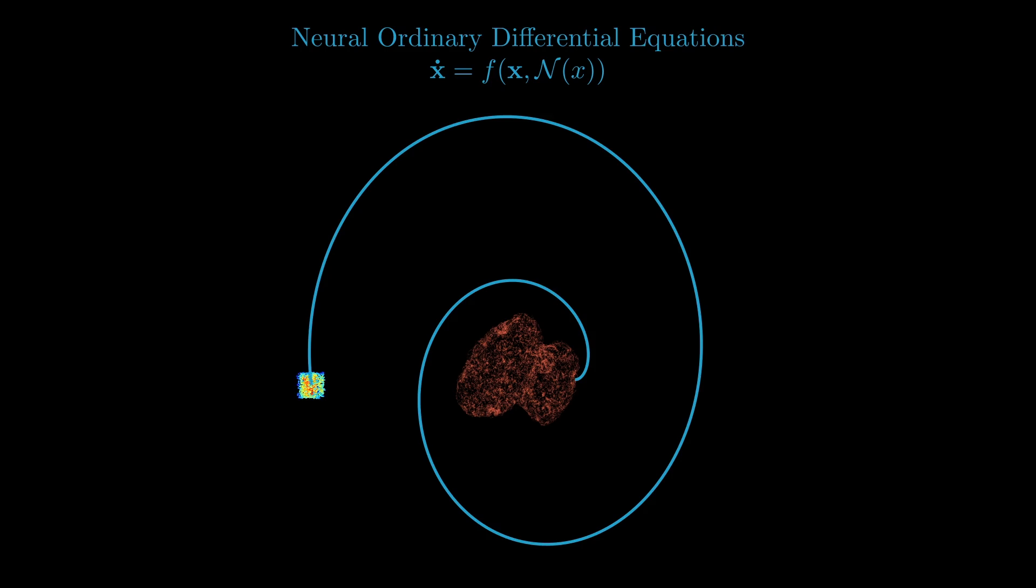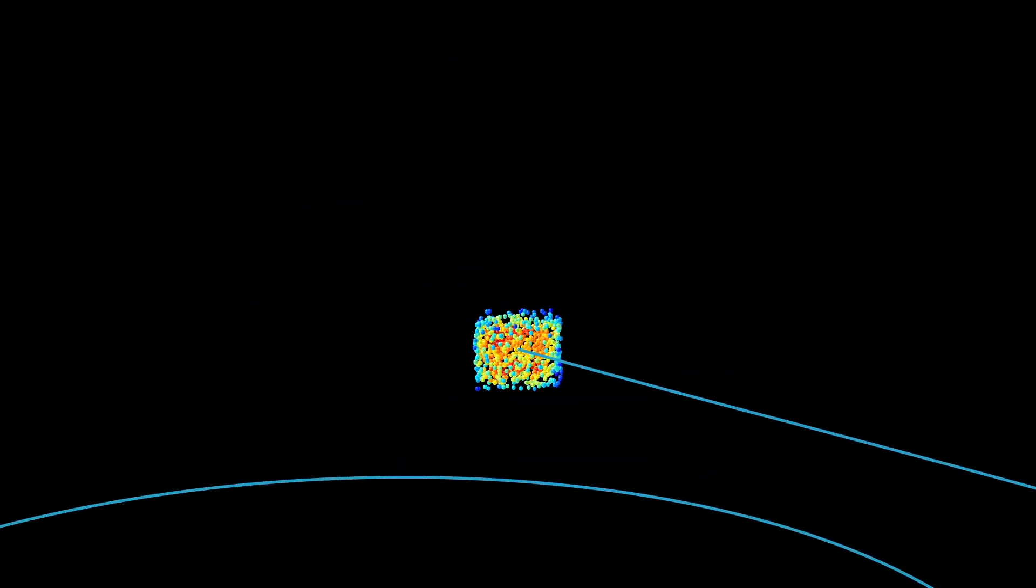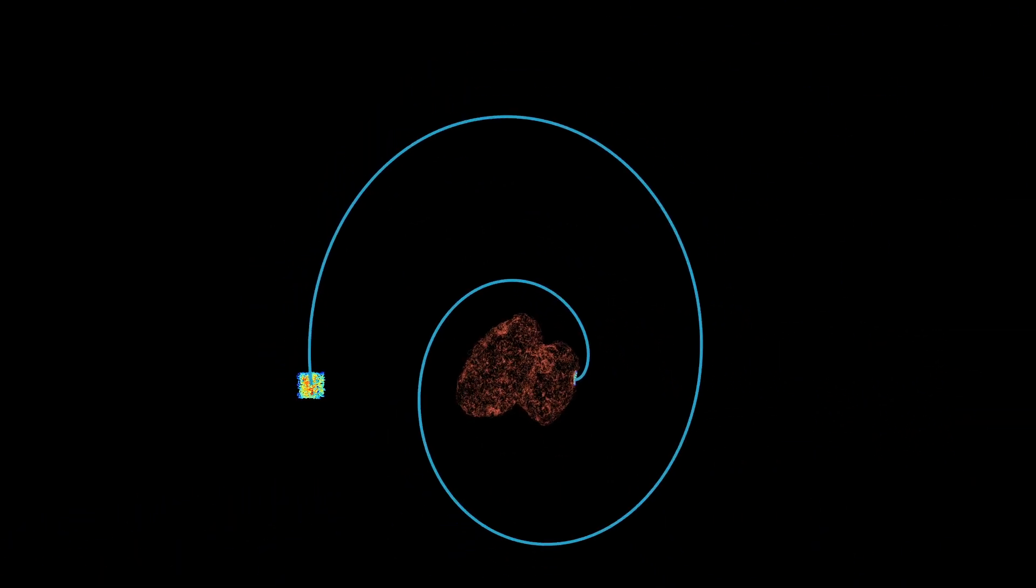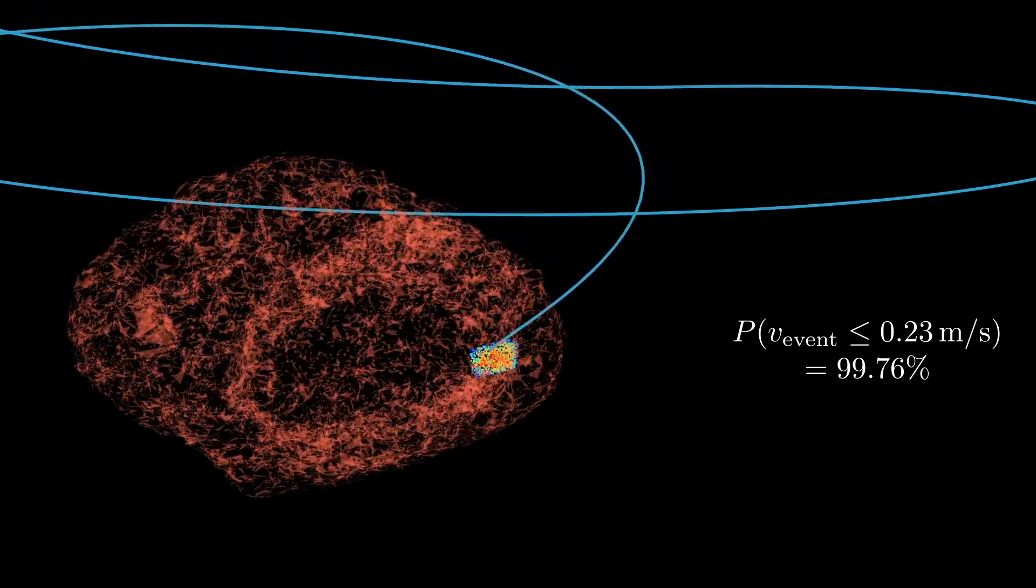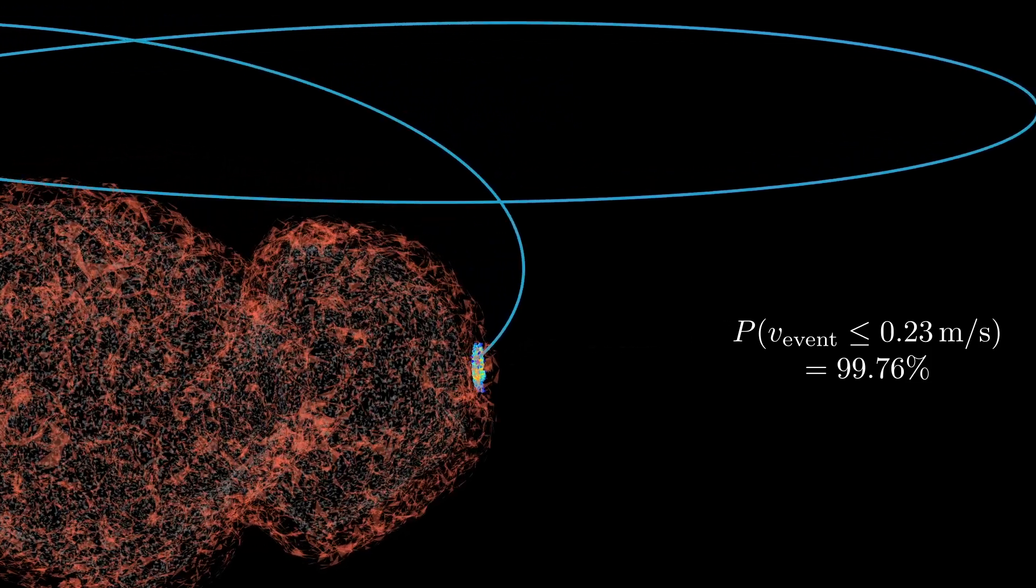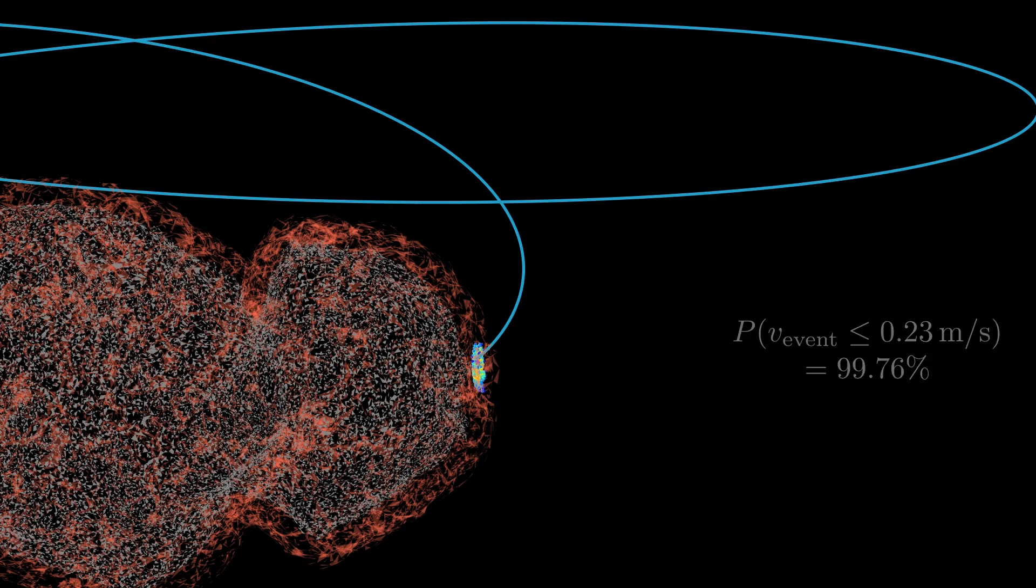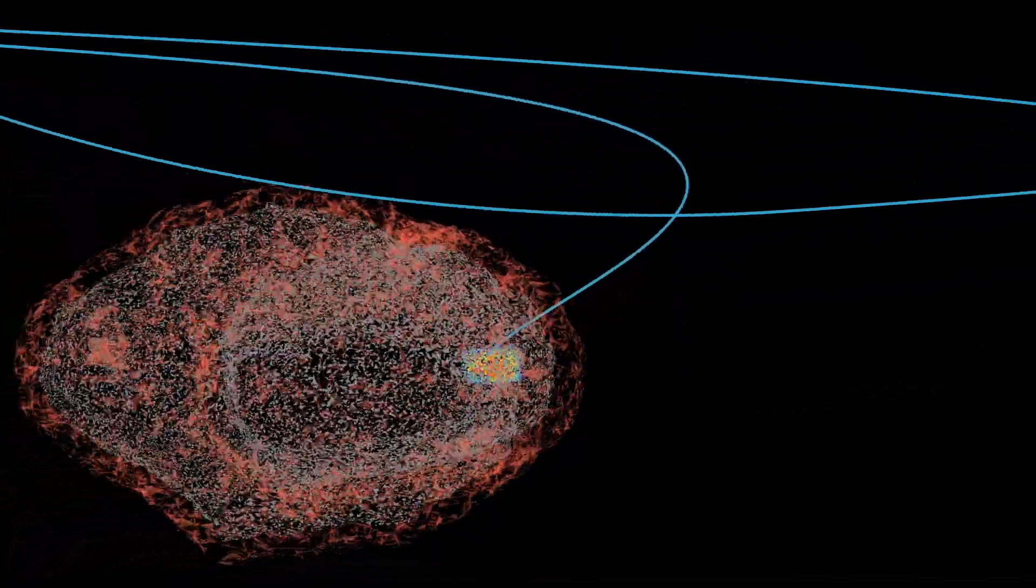For instance, imagine we have, due to navigation errors, an initial uniform state uncertainty of 25 meters in position and 0.1 kilograms in mass. We can then verify that given this uncertainty, the final relative velocity of the spacecraft with respect to the comet will be less than 0.23 meters per second in almost all cases.